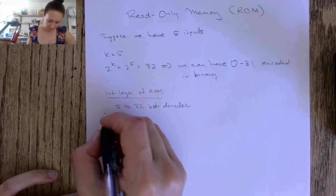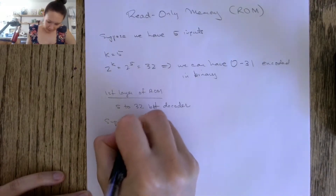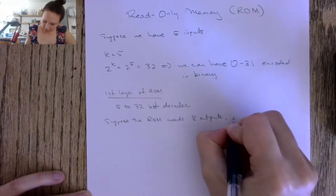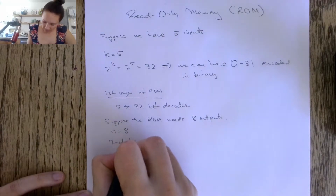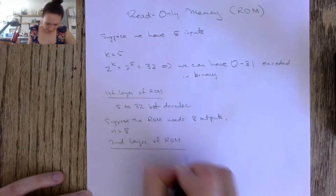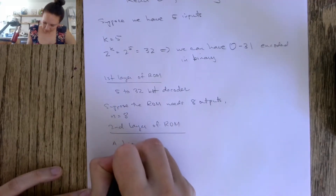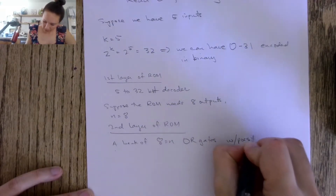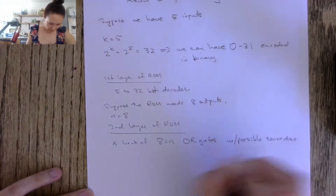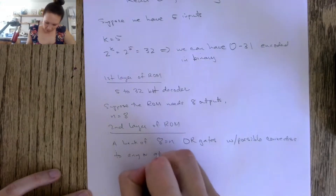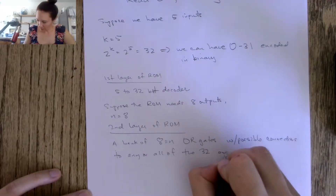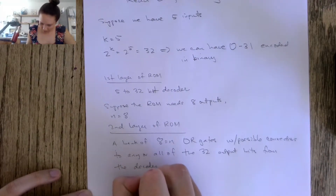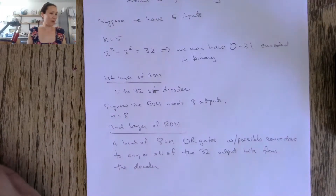The second layer of the ROM — suppose the ROM needs eight outputs, so N equals eight. Then the second layer will be a bank of eight OR gates with possible connections to any or all of the thirty-two output bits from the decoder. That's a lot of words, so let me put a picture to this so you can see what I'm talking about.